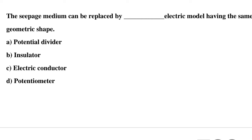Question 6: The seepage medium can be replaced by a dash electric method having the same geometric shape — Option A: potential divider, Option B: insulator, Option C: electric conductor, Option D: potentiometer. The correct answer is Option C: electric conductor.